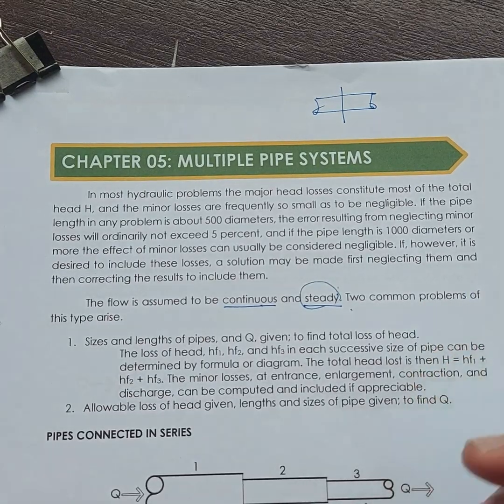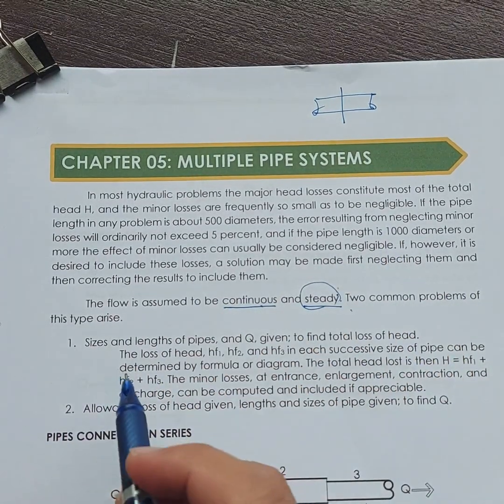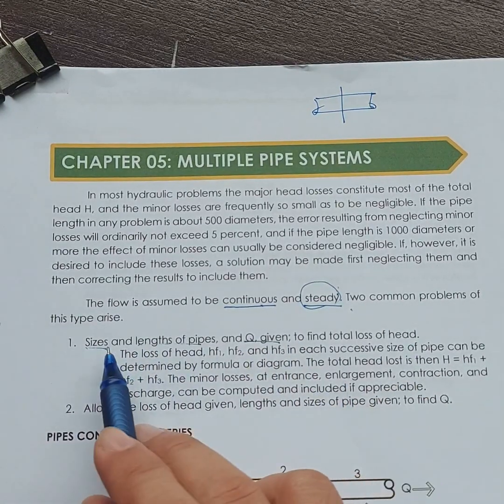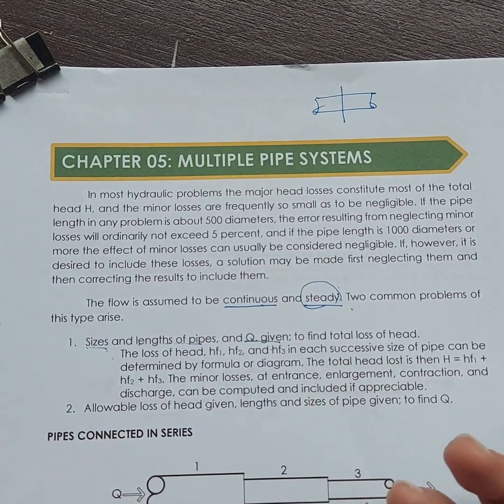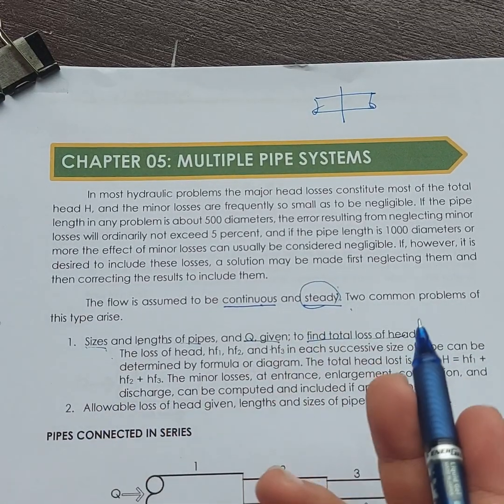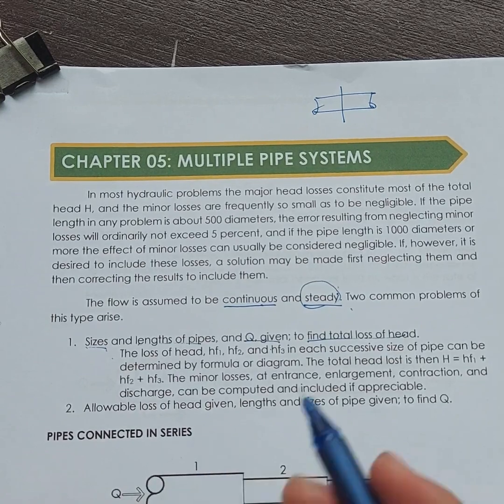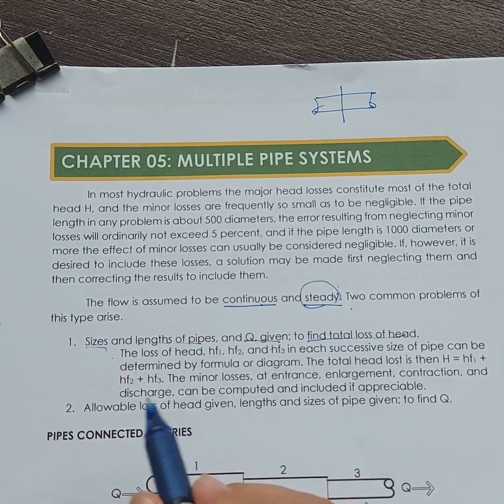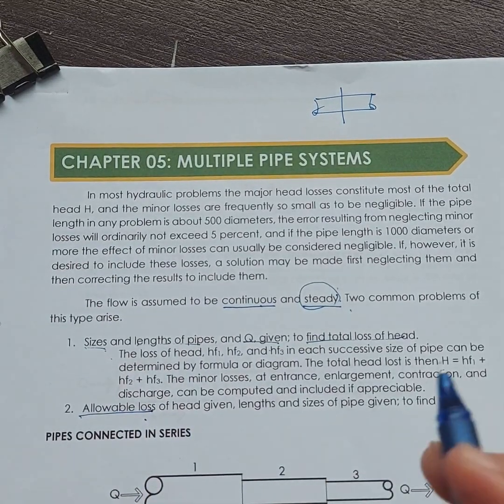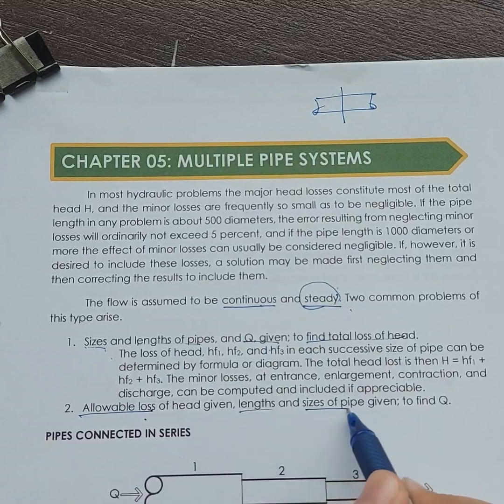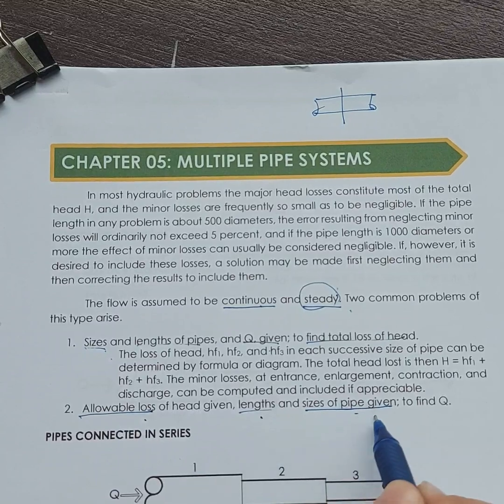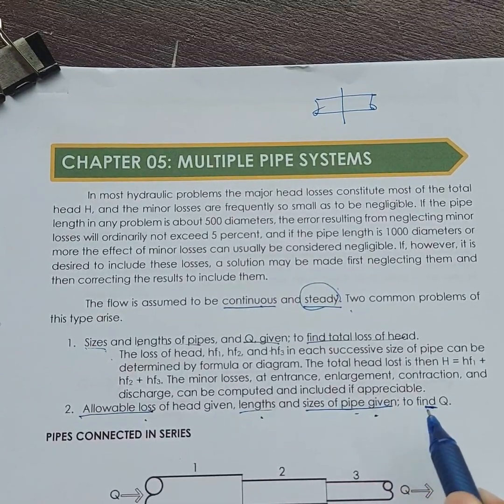When the flow is steady, steady means that the discharge, the velocity, remains constant relative to time. So that means, for example, we have a pipe, and then a certain section of the pipe if you're going to try to analyze. In reality, the velocity varies, the velocity of the liquid inside the pipe varies from time to time. And it is difficult to analyze that kind of situation. The velocity varies - after one second it is slower, after a few seconds it is faster. That would somehow affect the analysis but that would be difficult.